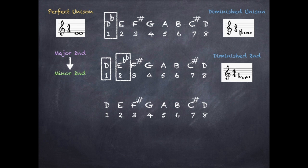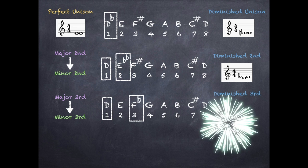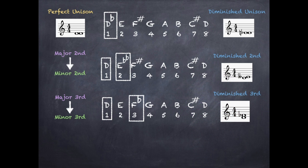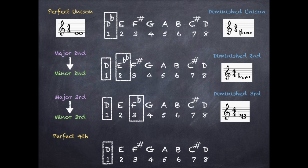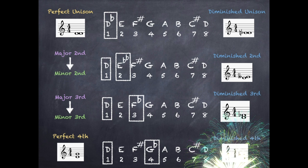To create a diminished third, first create a major third interval — the first note, D, to the third note in the major scale, which is F sharp. Convert this to a minor third by flattening the top note — F sharp becomes F. Then convert this to a diminished third by flattening the top note of the minor third — F becomes F flat. To create a diminished fourth, first create a perfect fourth interval. We go from D to the fourth note, which is G. To create a diminished fourth, flatten the top note of the perfect fourth, so G becomes G flat.